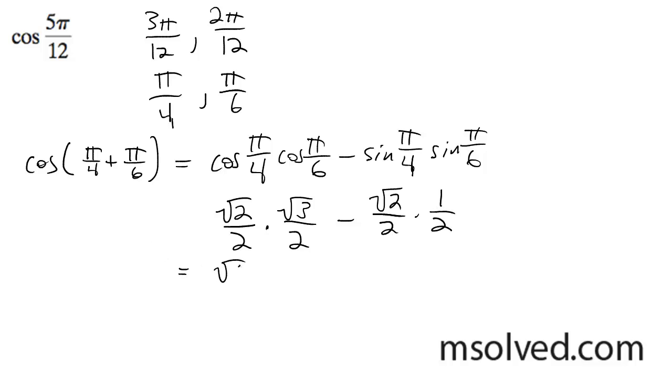So I'm multiplying these out. I get √6 over 4, and then I get minus √2 over 4.